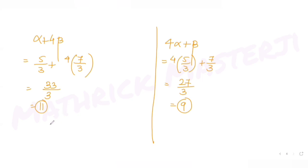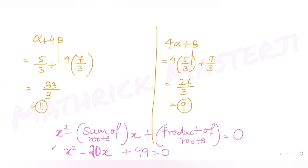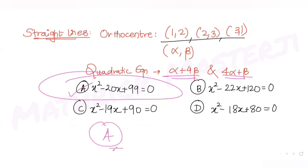The quadratic equation with roots 11 and 9 is x² - (sum of roots)x + (product of roots) = 0. Sum = 11 + 9 = 20, product = 11×9 = 99. So the equation is x² - 20x + 99 = 0, which matches answer choice A.